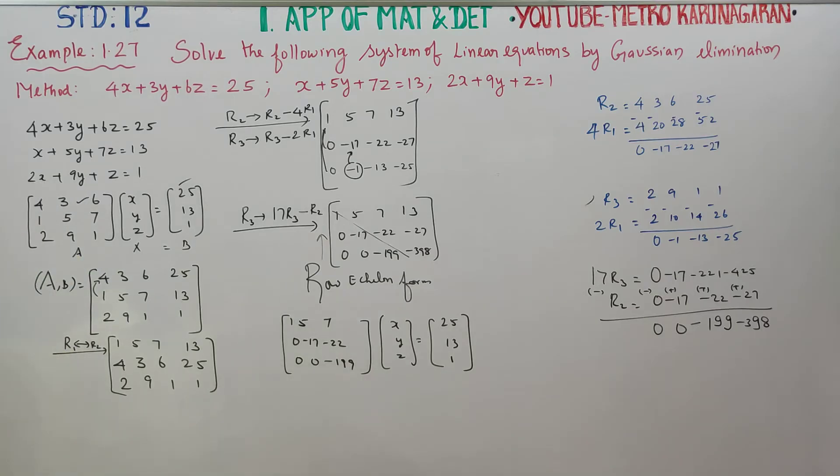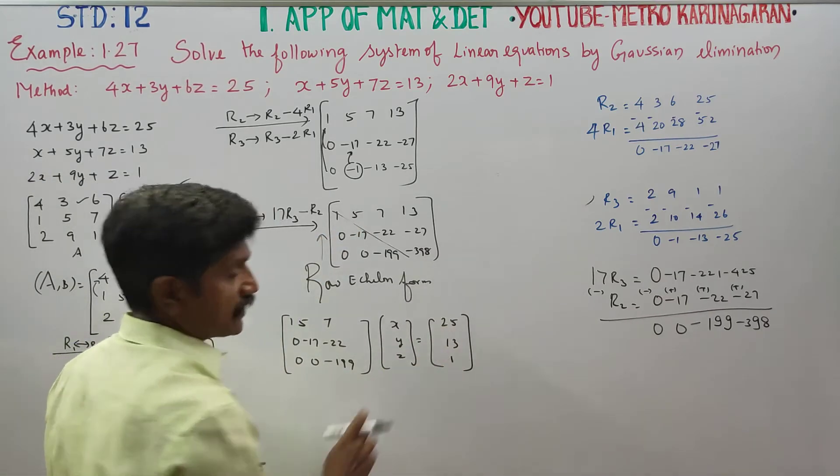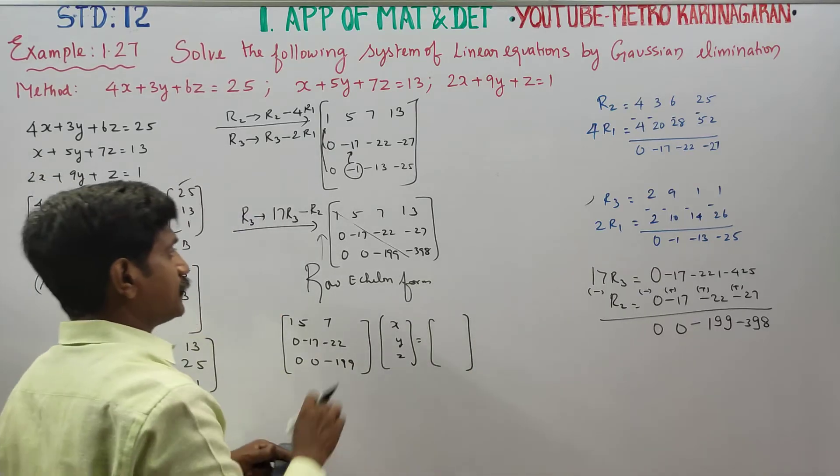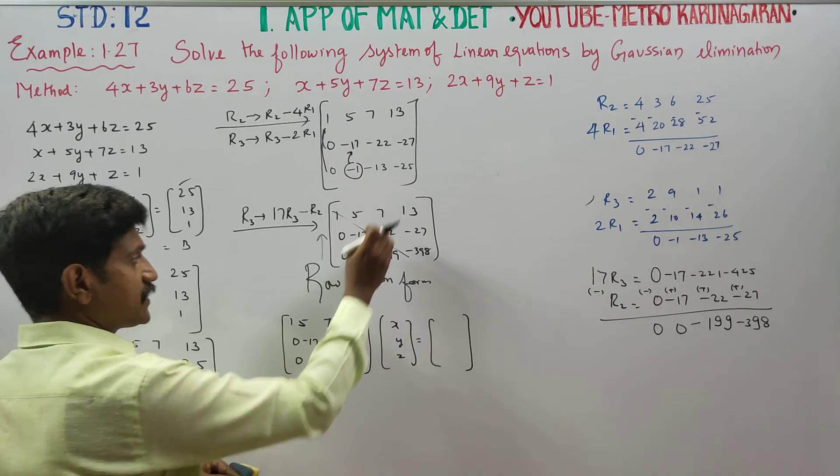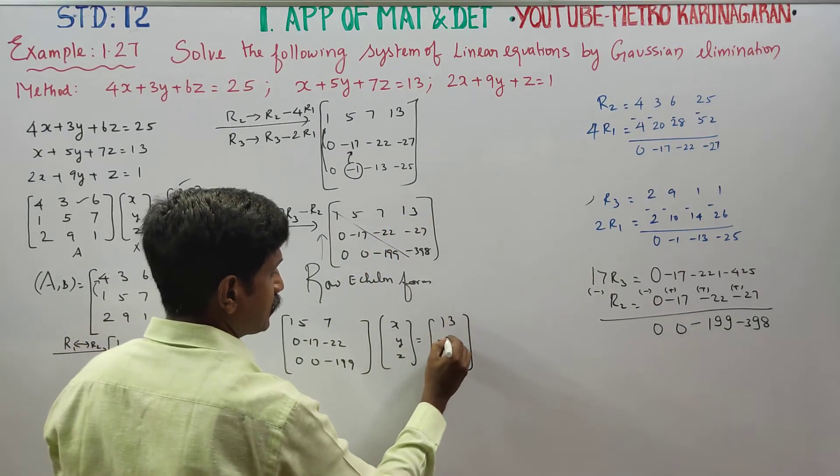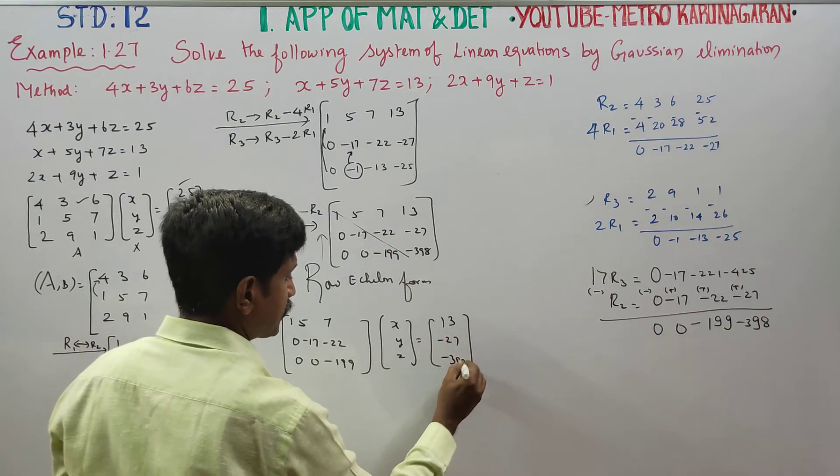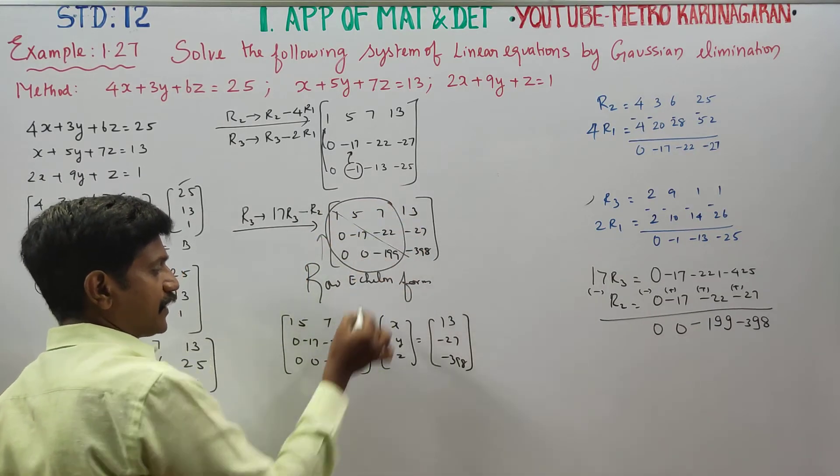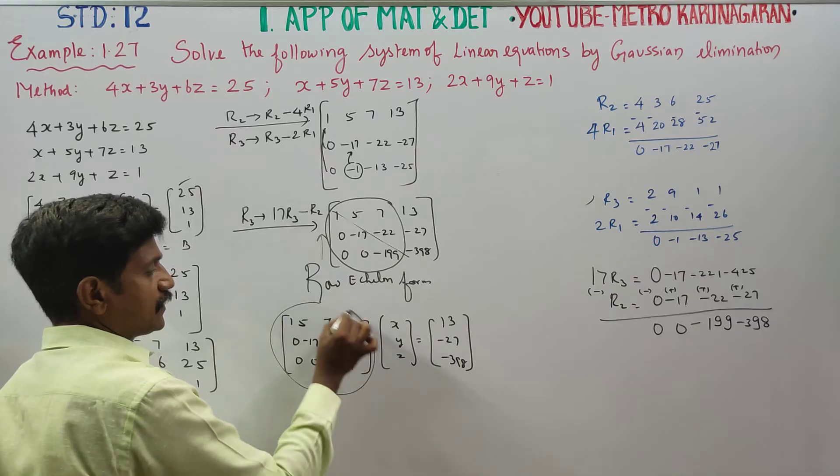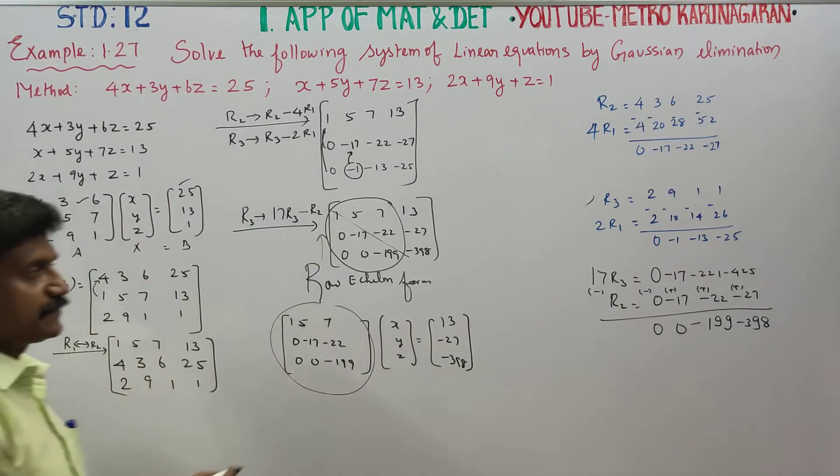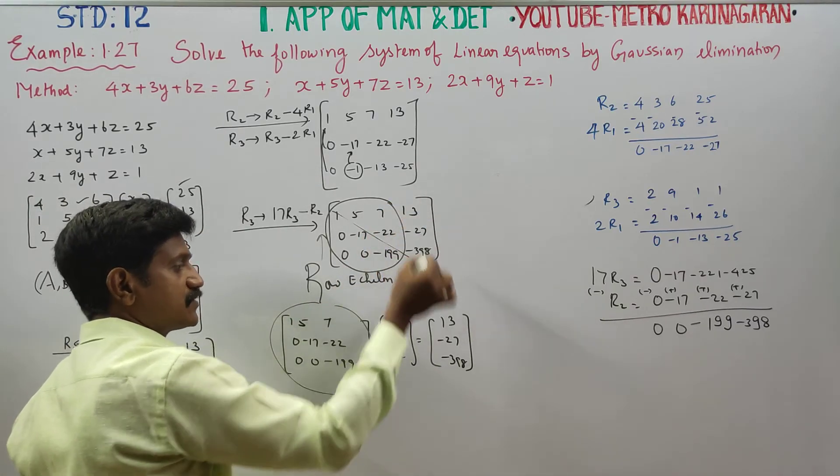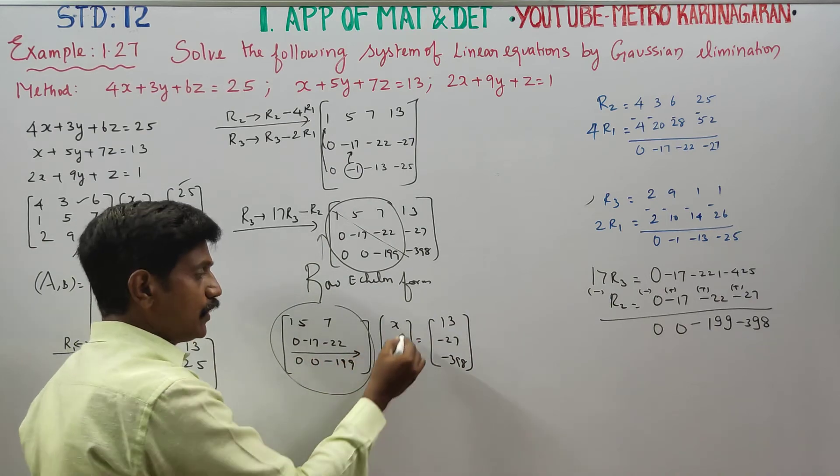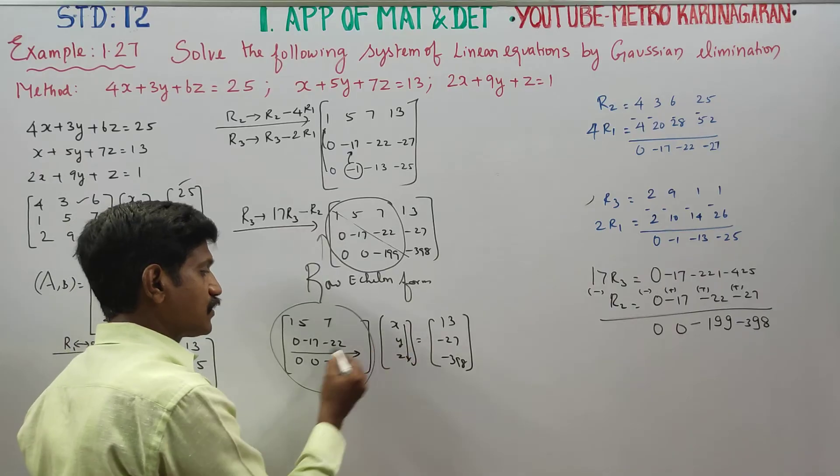xyz is equal to 13, minus 27, and minus 398. This is the augmented matrix. The next one is xyz about the constant. Back substitution method: last row, last column.